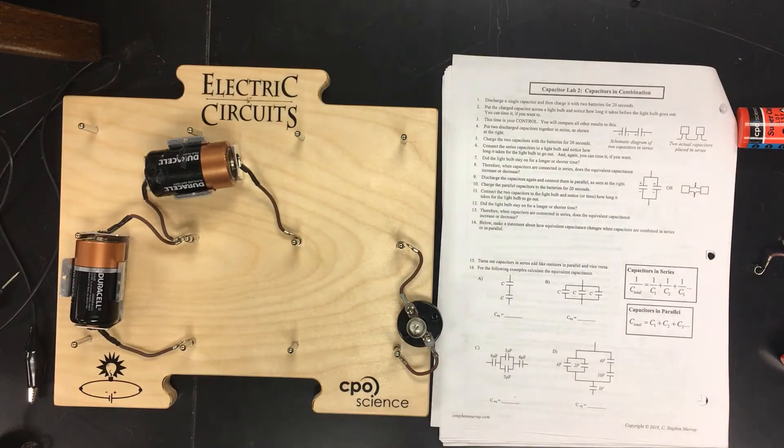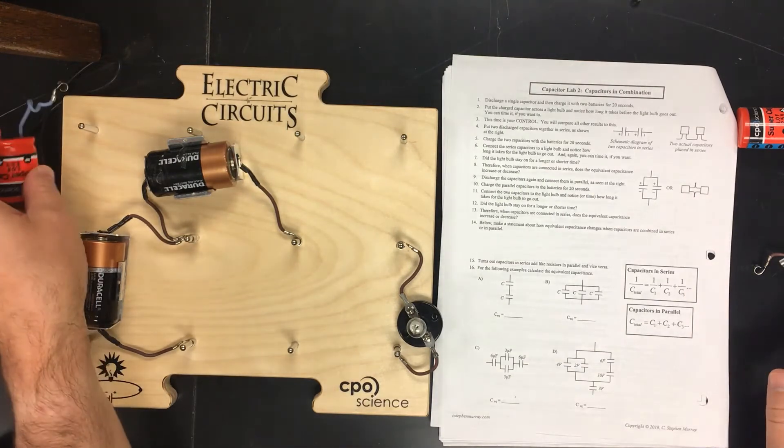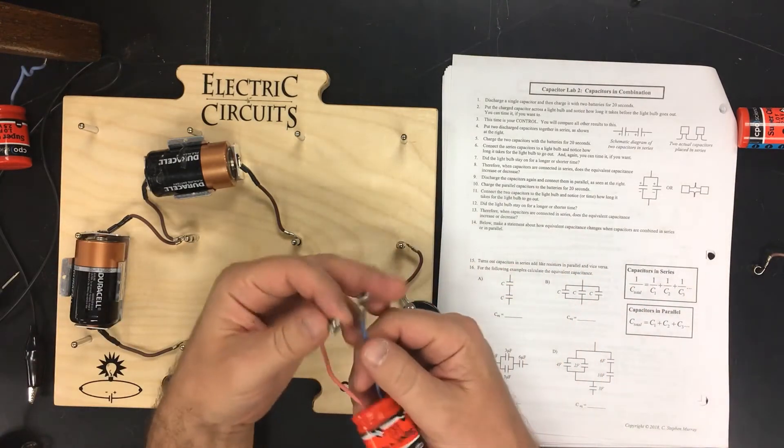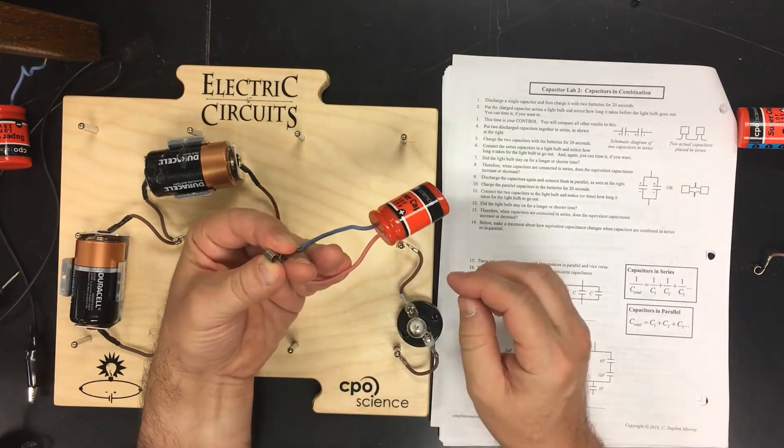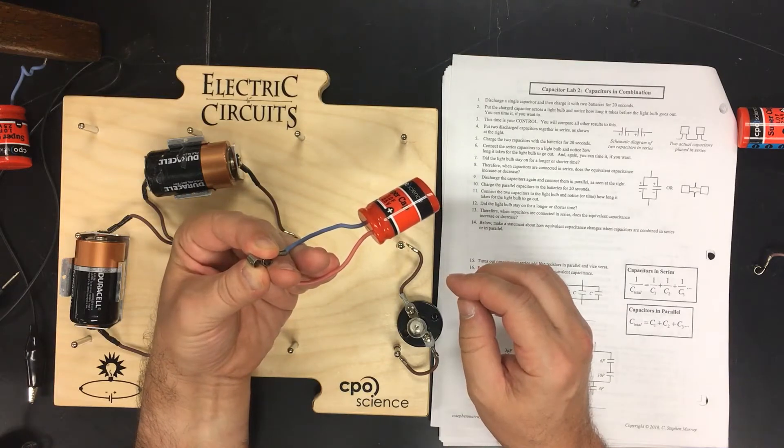All right, so it says Lab 2: capacitors in combination. So first thing to do is to discharge our capacitor. There we go, holding that together. It won't take a couple seconds and it'll completely discharge.